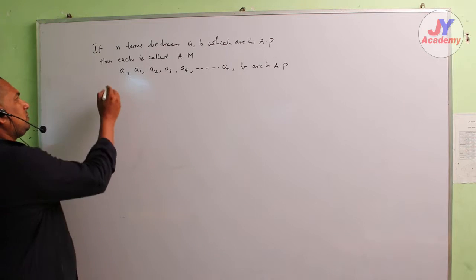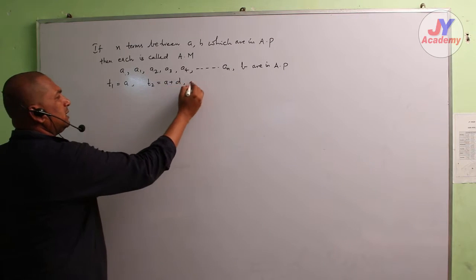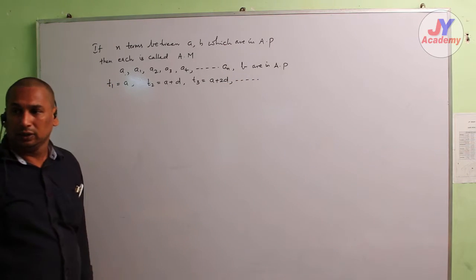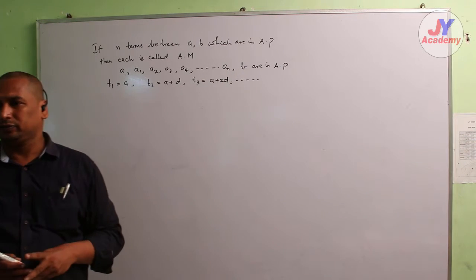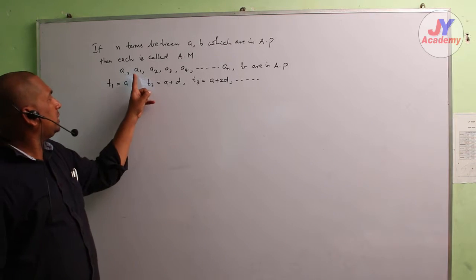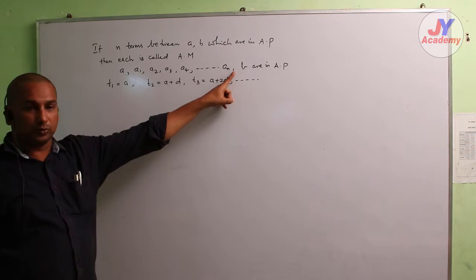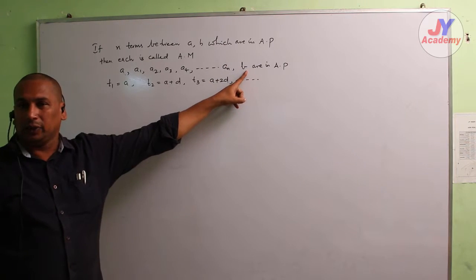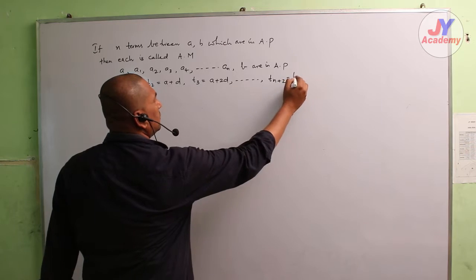We know the first term is a, and the second term is a plus d, the third term is a plus 2d, and so on. Now, which term is b? There are n terms in between, so the position of b is n plus 2. Therefore, t(n+2) is equal to b.